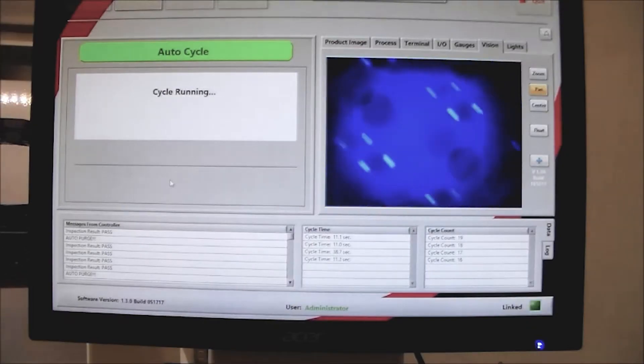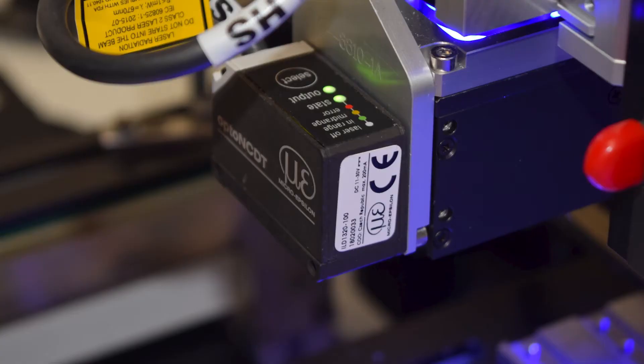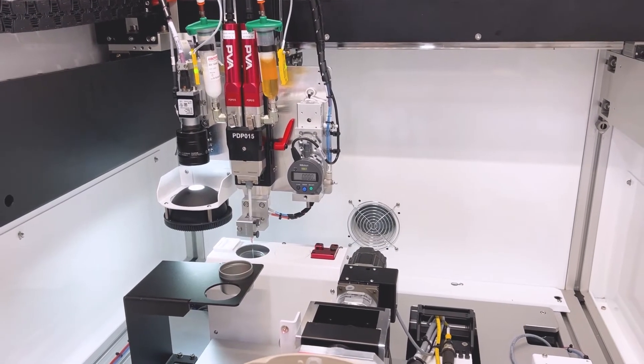Process controls such as a fiducial camera, laser height sensor, and shot scale can help improve the reliability of your process.